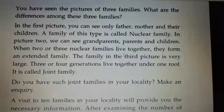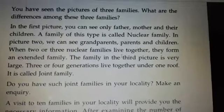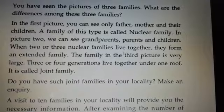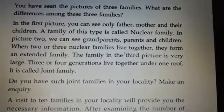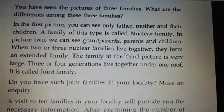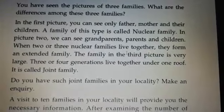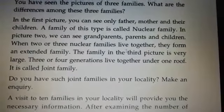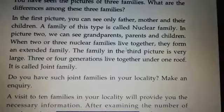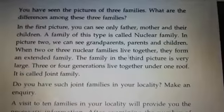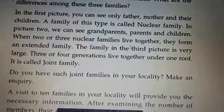These are the different types of families. First: Nuclear Family — that includes Father, Mother and their children. Second: Extended Family — it includes Grandparents, Parents and Children, where 2 or 3 Nuclear Families live together. Third: Joint Family — members of 3 or 4 generations live together under one roof.